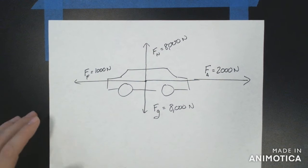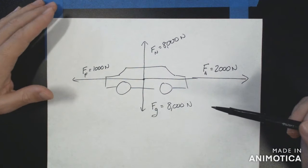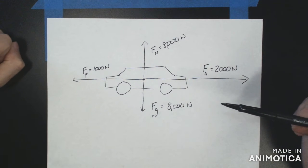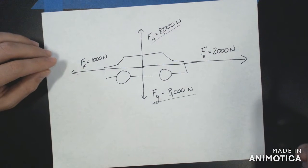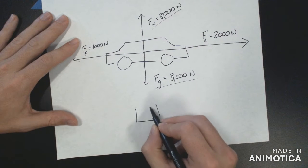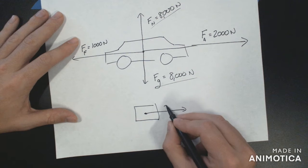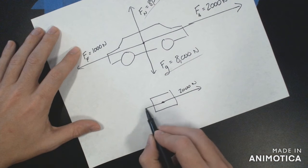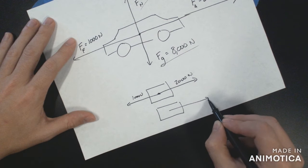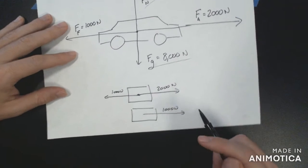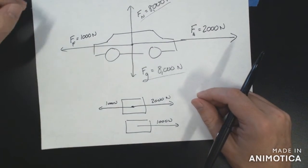I've identified all of the forces acting on the object with directional arrows. The 8,000 newton normal force and 8,000 newton gravity cancel each other. The net force acting on the car is 2,000 newtons in one direction and 1,000 newtons in the opposite direction, which simplifies down to 1,000 newtons in one direction. I'm increasingly simplifying the diagram as we go.